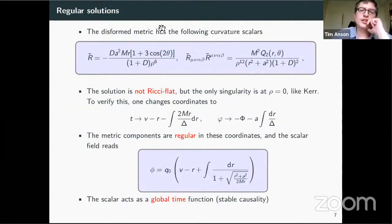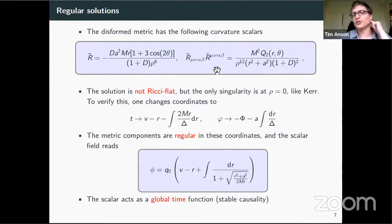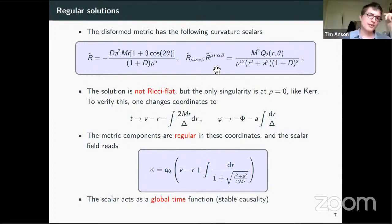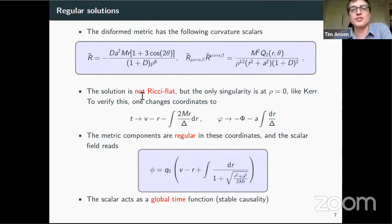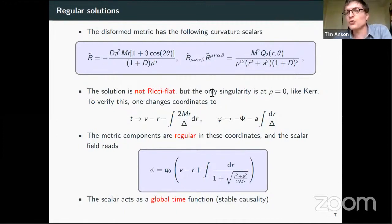Let's look at some of the properties. The first thing we can calculate is some curvature scalars. The first thing we note is that the solution is no longer Ricci flat, because the Ricci scalar doesn't vanish — unless D or a is zero. What these curvature invariants hint at is that there's only one singularity at rho equals zero, just like in Kerr.